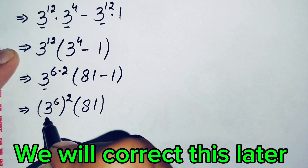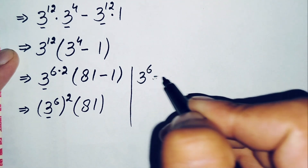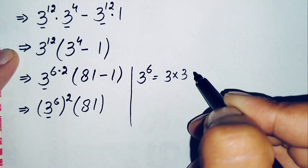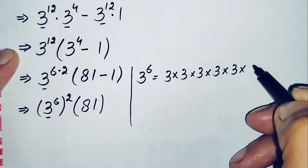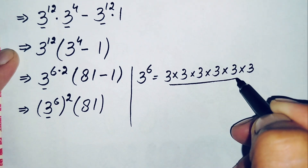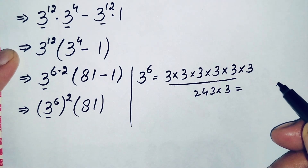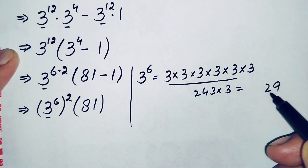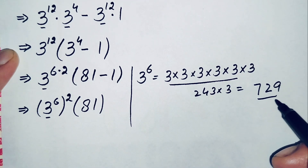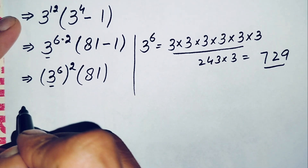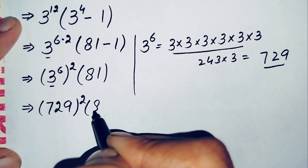Now we find the value of 3 raised to power 6 by multiplying 3 six times: 3 times 3 is 9, times 3 is 27, times 3 is 81, times 3 is 243, times 3 is 729. So 3 raised to power 6 is 729. We replace 3 raised to power 6 with 729, and 81 minus 1 is 80. This becomes 729 squared times 80.